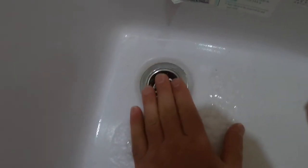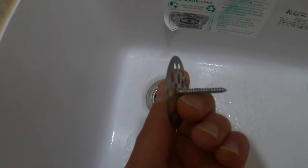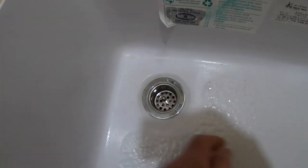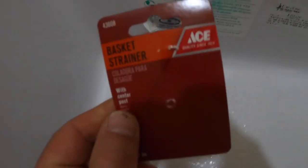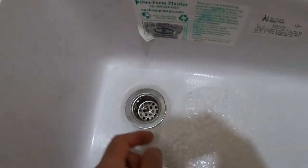And it's recessed so that even if you stand on it, it won't bend anymore. So if yours is bent or if yours gets plugged up all the time, take this off and put in a basket strainer, an inch and a half from ACE Hardware.